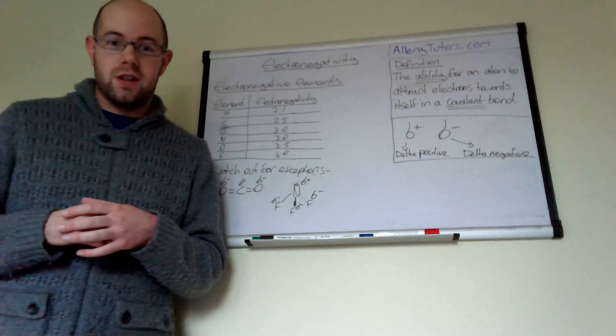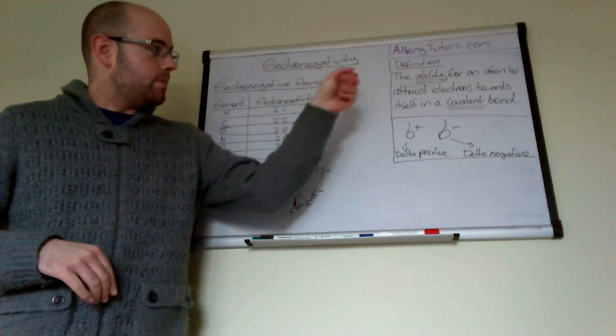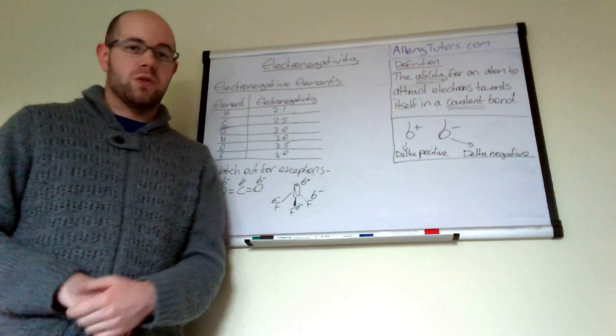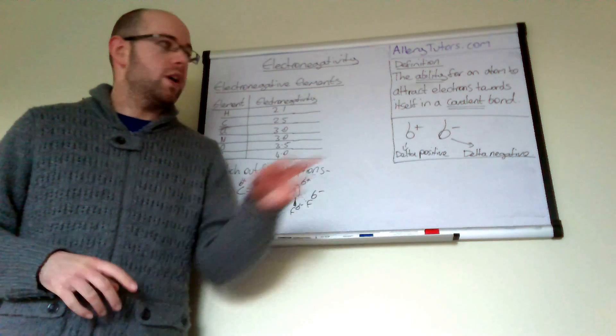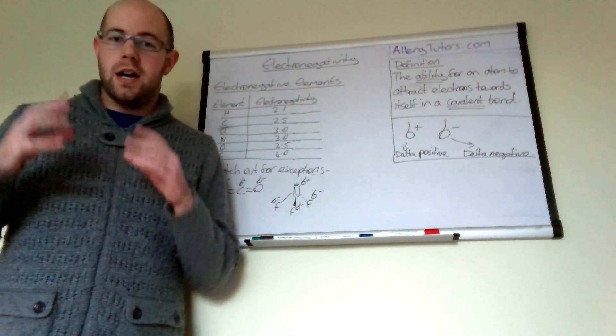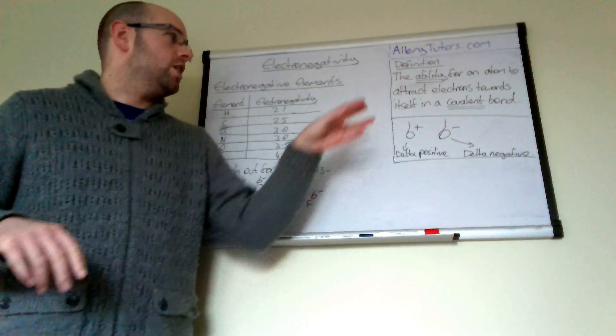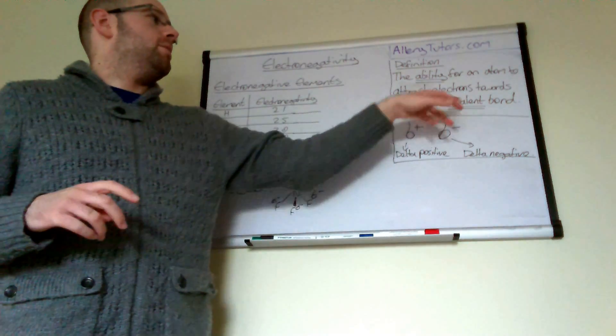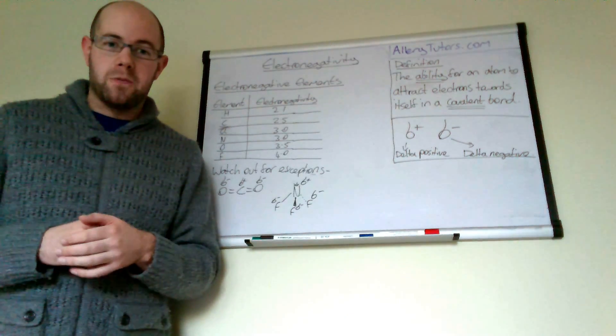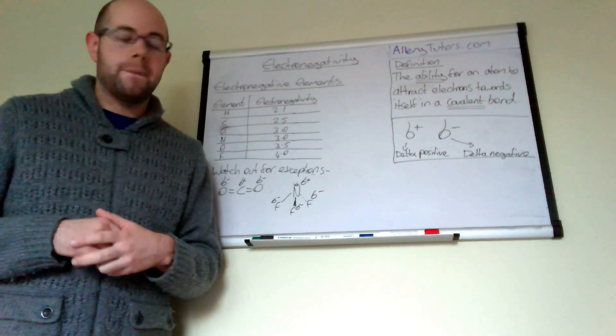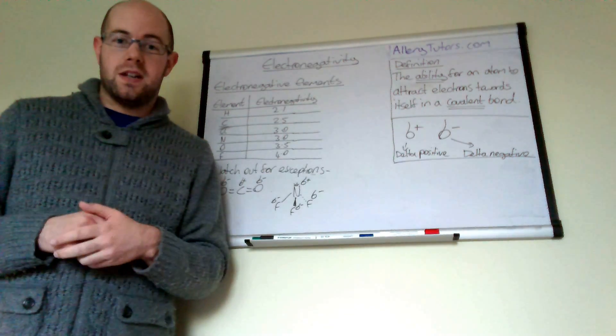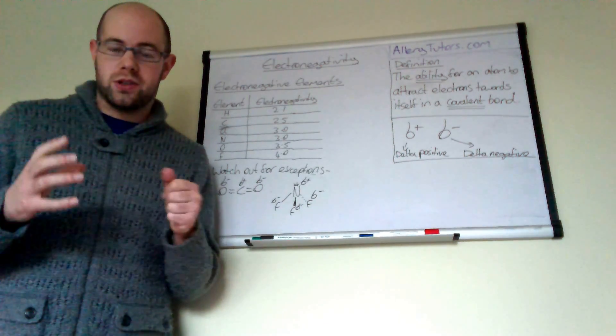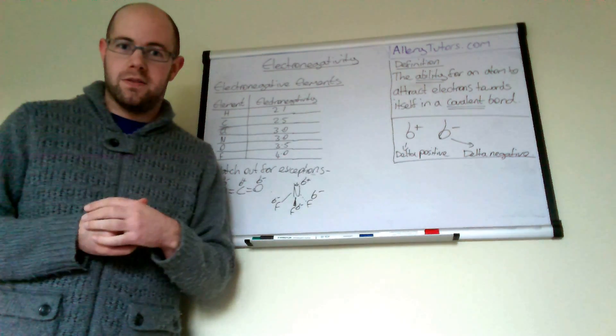We're going to start with the definition for electronegativity: the ability or power of an atom to attract electrons towards itself in a covalent bond. The two most crucial parts are the ability for an atom to attract electrons and the covalent bond aspect. You get electronegativity in covalently bonded molecules, and where you've got electronegativity you can also have a little bit of ionic character.